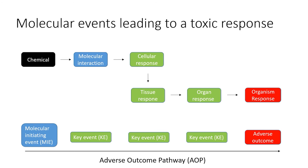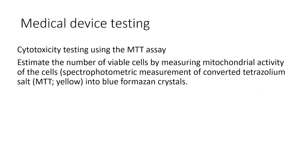To routinely test new materials for possible toxic potential, several standardized tests are available that measure the effect of exposure on specific cellular events. Common for these tests is that they must be easy to perform and cost effective. Therefore, they usually measure only one specific event or endpoint. One frequently used method for testing the cytotoxic potential of biomaterials is the MTT method.